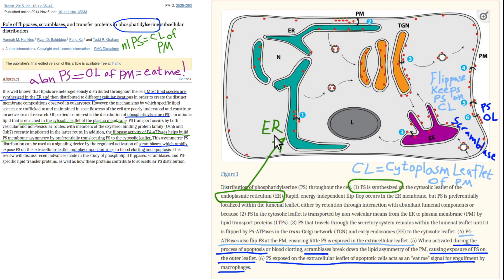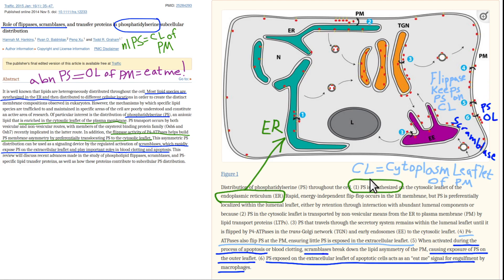These lipid transport proteins ship phospholipids out to the plasma membrane. The little reddish circles represent phosphatidylserine, and they should be on the inner leaflet — on the cytoplasm side of the plasma membrane. You don't want them on the outer leaflet. CL is also for inner leaflet — it means cytoplasm leaflet, cytoplasm side.